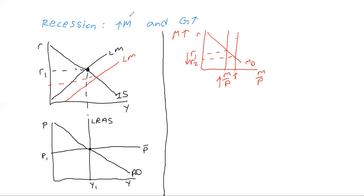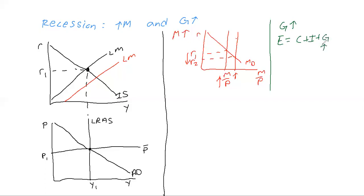Now the second portion: an increase in government spending. This is in the goods and services market where E equals C plus I plus G. If we increase government spending, we increase expenditure, and when we increase expenditure the IS curve shifts to the right — IS2.